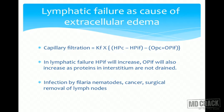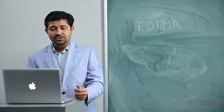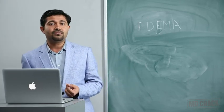Examples of lymphatic obstruction include infection by filaria — filariasis or elephantiasis — which blocks the lymphatic channels. Cancer metastasis: metastatic cells travel through lymphatics and cause blockage. Cancer patients who undergo surgery may have draining lymph nodes or lymphatic channels removed, causing obstruction to lymphatic drainage. The area drained by those lymph nodes will develop edema.